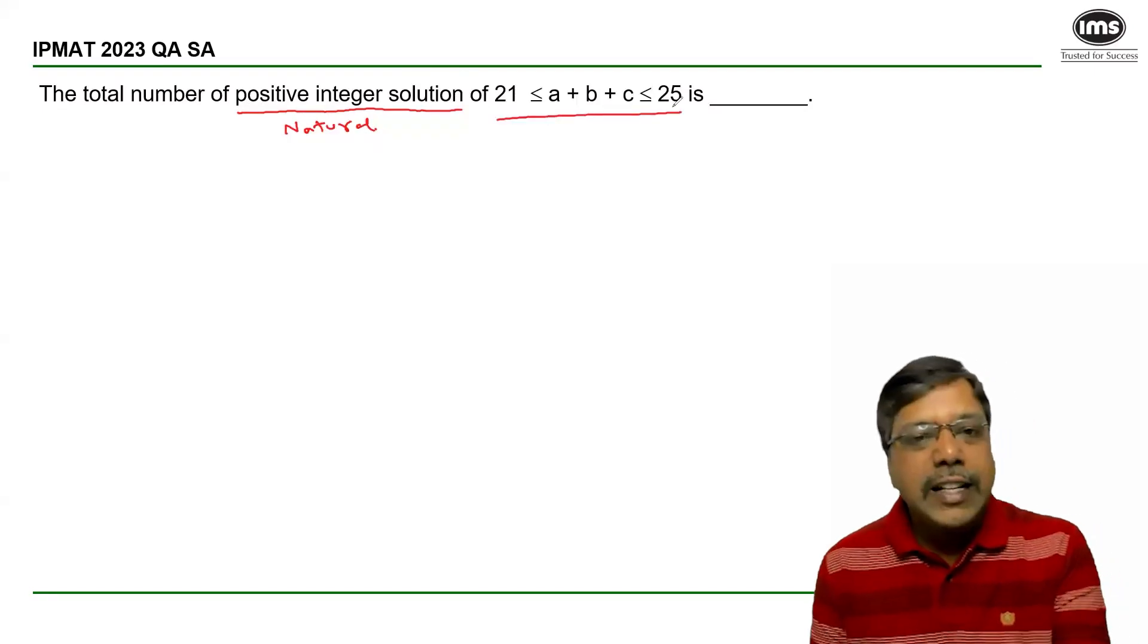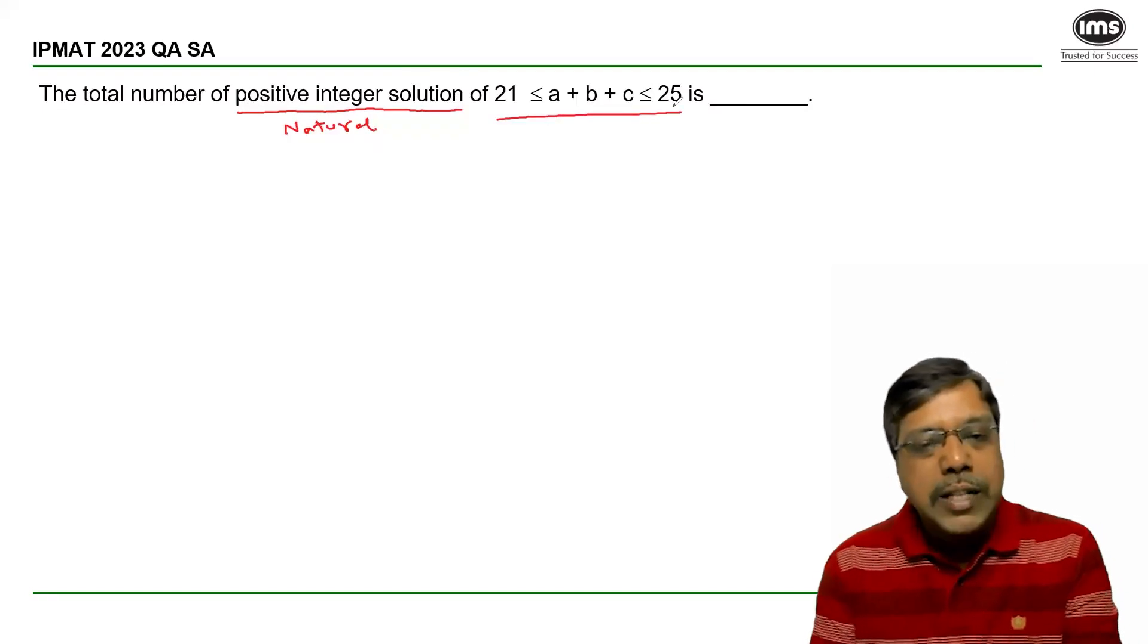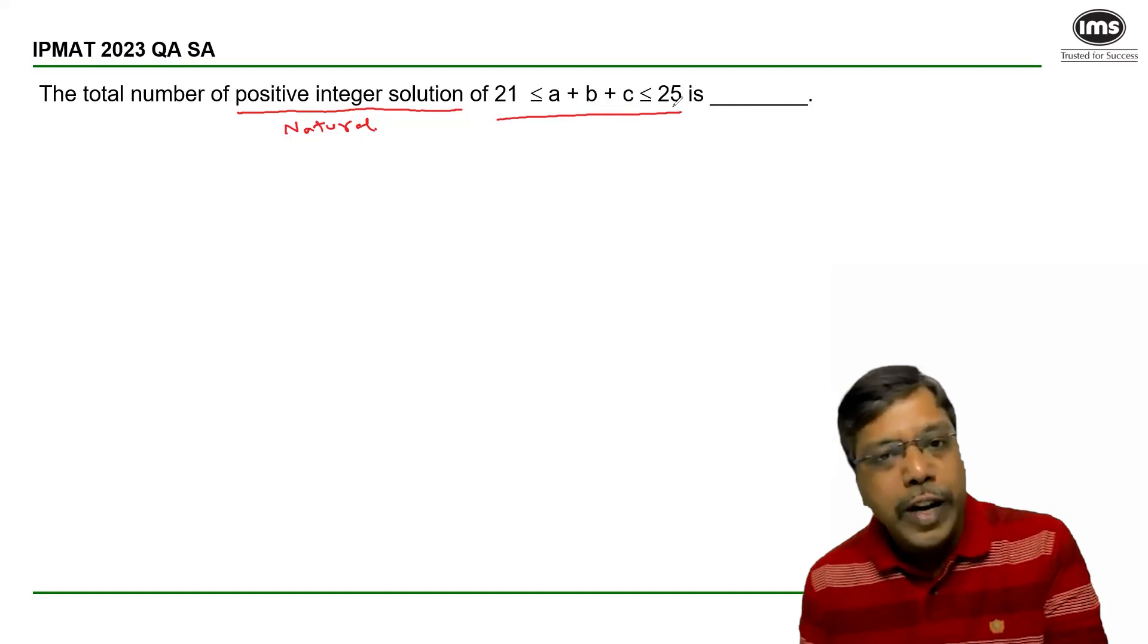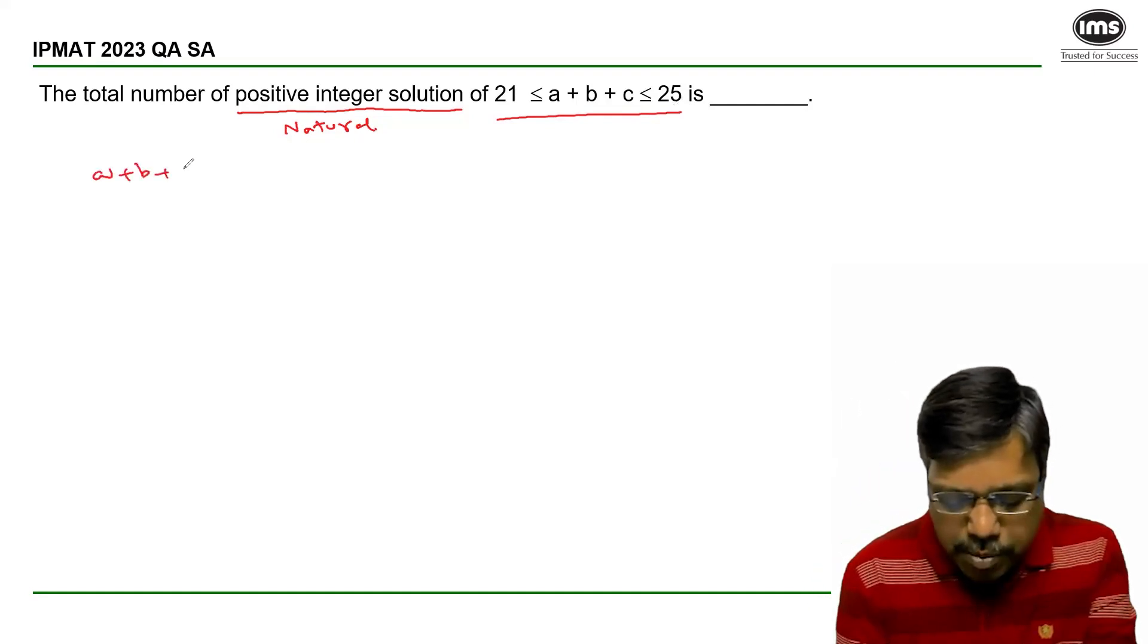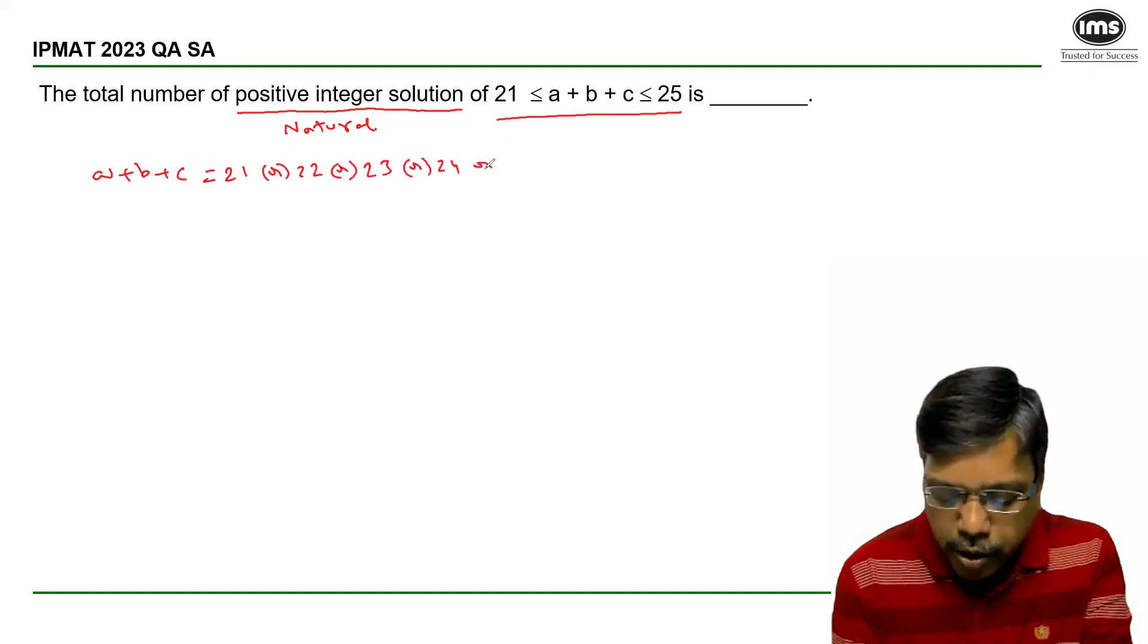of 21 ≤ A + B + C ≤ 25, which means the sum of A, B, and C can be equal to 21 or 22 or 23 or 24 or 25.